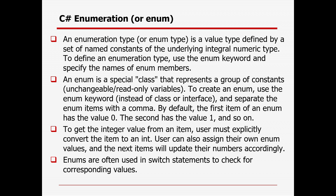Separate the enum items or members by comma. By default, the first item of an enum member will have the value zero, the second item will be one, and so on. To get the integer value from an item, you must explicitly convert the item to an integer. You can also assign your own enum values, and the next item will update its number accordingly. Enums are often used in switch statements or if-else statements to check for corresponding values.